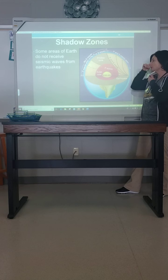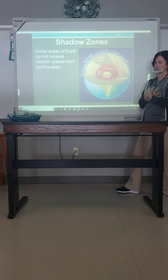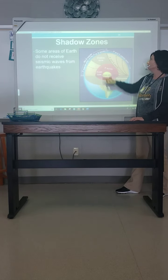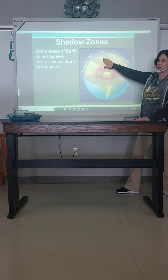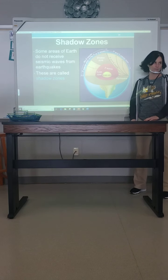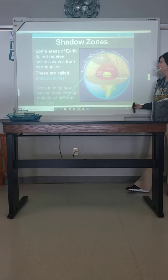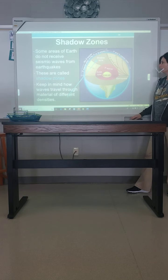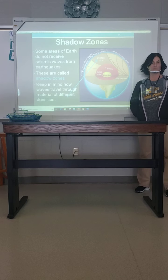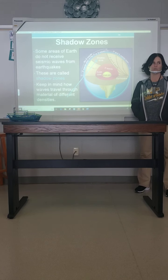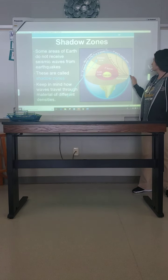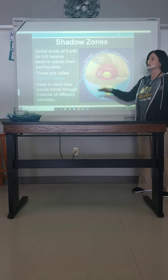This is getting to a really important point. It says some areas of Earth do not receive seismic waves from earthquakes. You see this thing right here called a shadow zone — there are no waves that will ever reach there. It all has to do with the waves that are able to get through and the speed that they're traveling. It consistently will affect their pathway from the source of the earthquake all the way to the opposite side of the world.